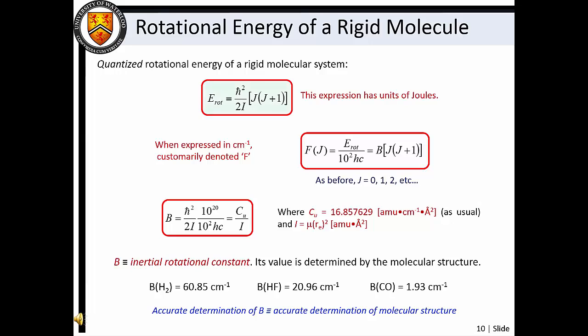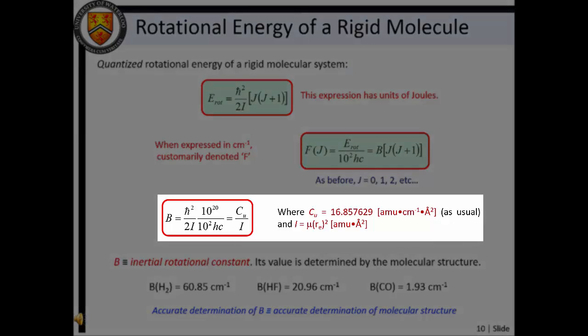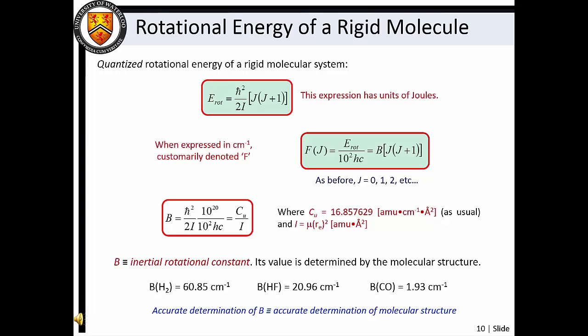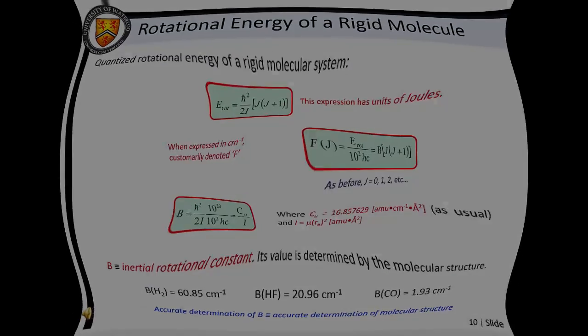Oftentimes, spectroscopists work in units of reciprocal centimeters and denote rotational energies with the symbol F of J. Assuming a rigid molecular geometry, we can collect all constants into a B value, which is our inertial rotational constant. If we express energies in reciprocal centimeters, mass in atomic mass units, and distance in angstroms, we find that B is proportional to the inertial constant C_u, which was introduced in our discussion of the square well potential in Masterclass 2.